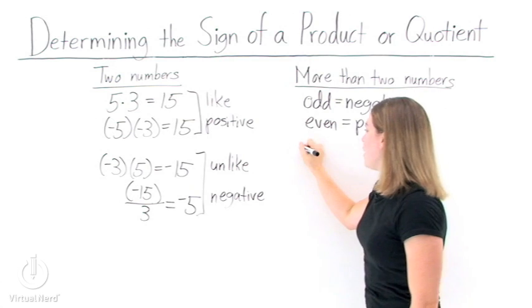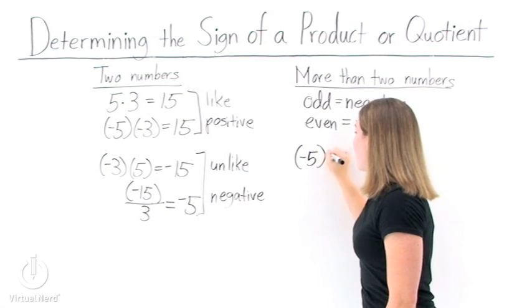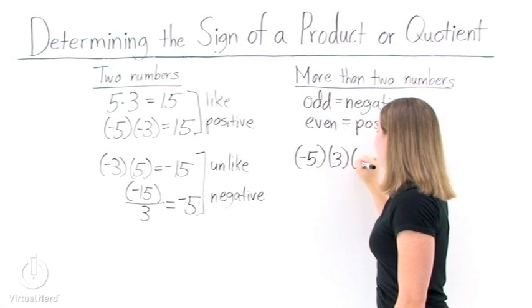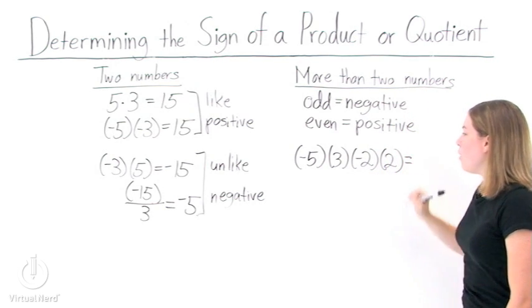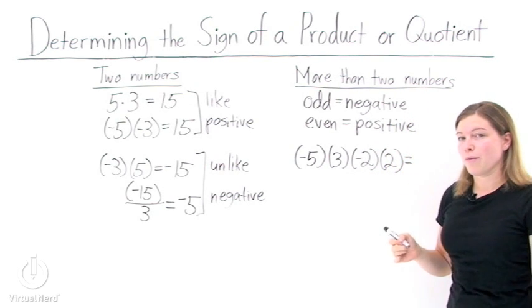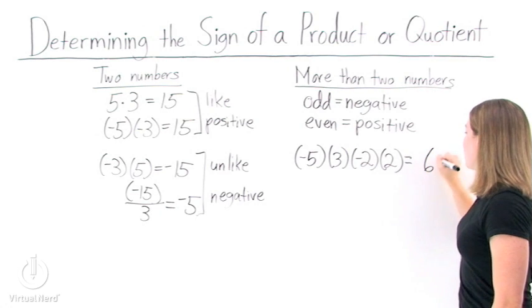So, if we look at an example, take negative 5 times positive 3 times negative 2 times positive 2. First, we multiply everything together, ignoring the signs. We get 60.